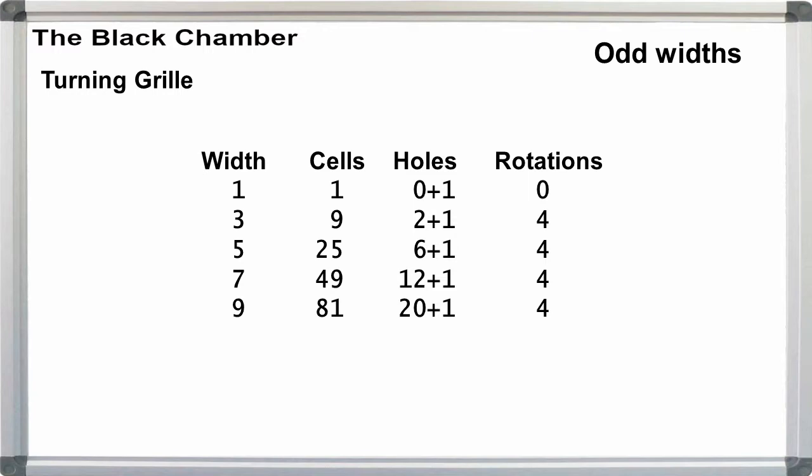For odd numbered grills, we always have the one central hole. For a width of 1, we have 1 cell, 1 hole, and 0 rotations. For a width of 3, we have 9 cells, 2 plus 1 holes, and 4 rotations.